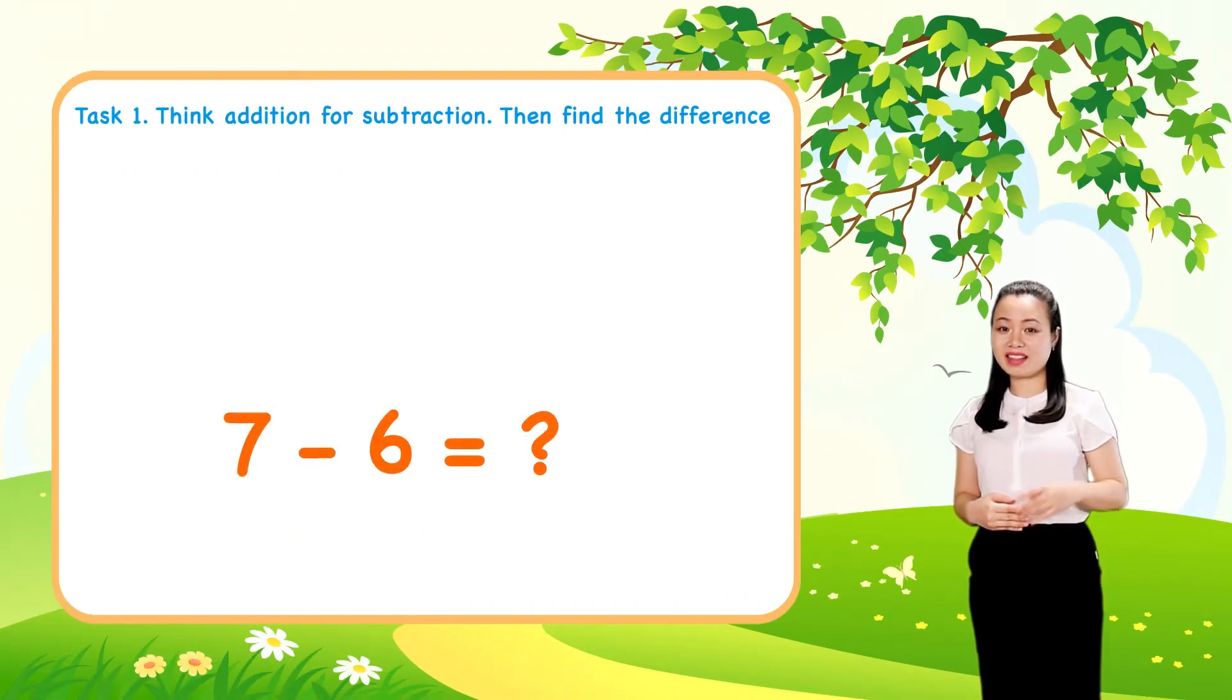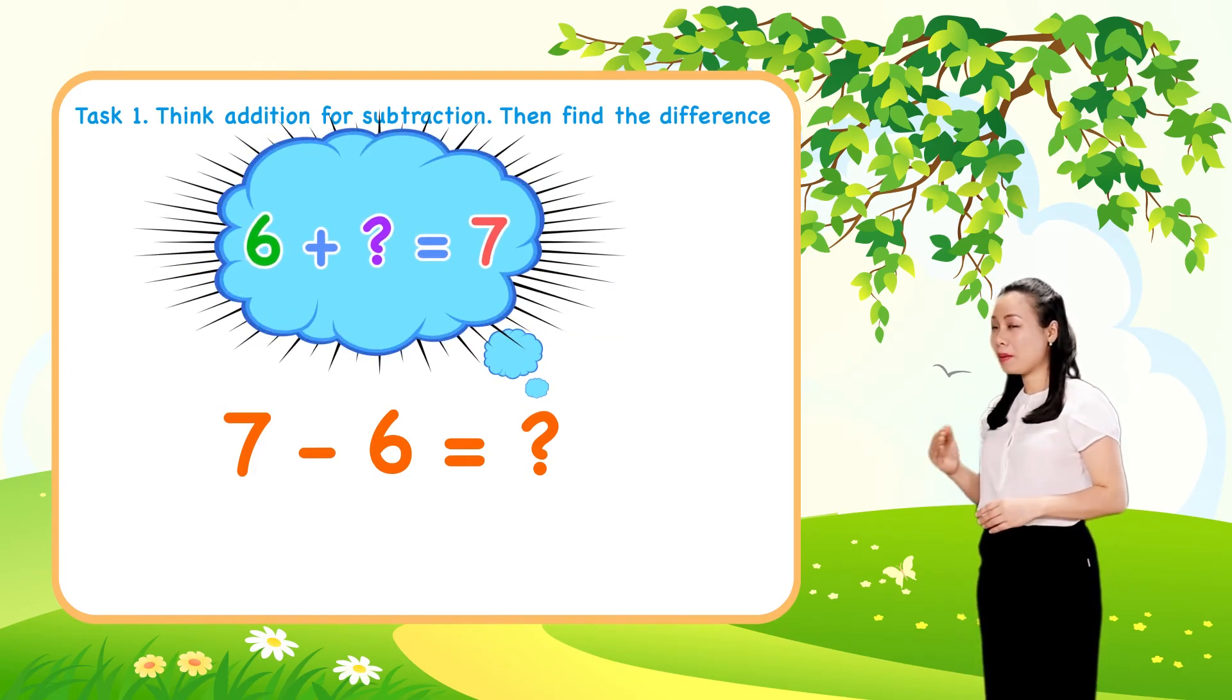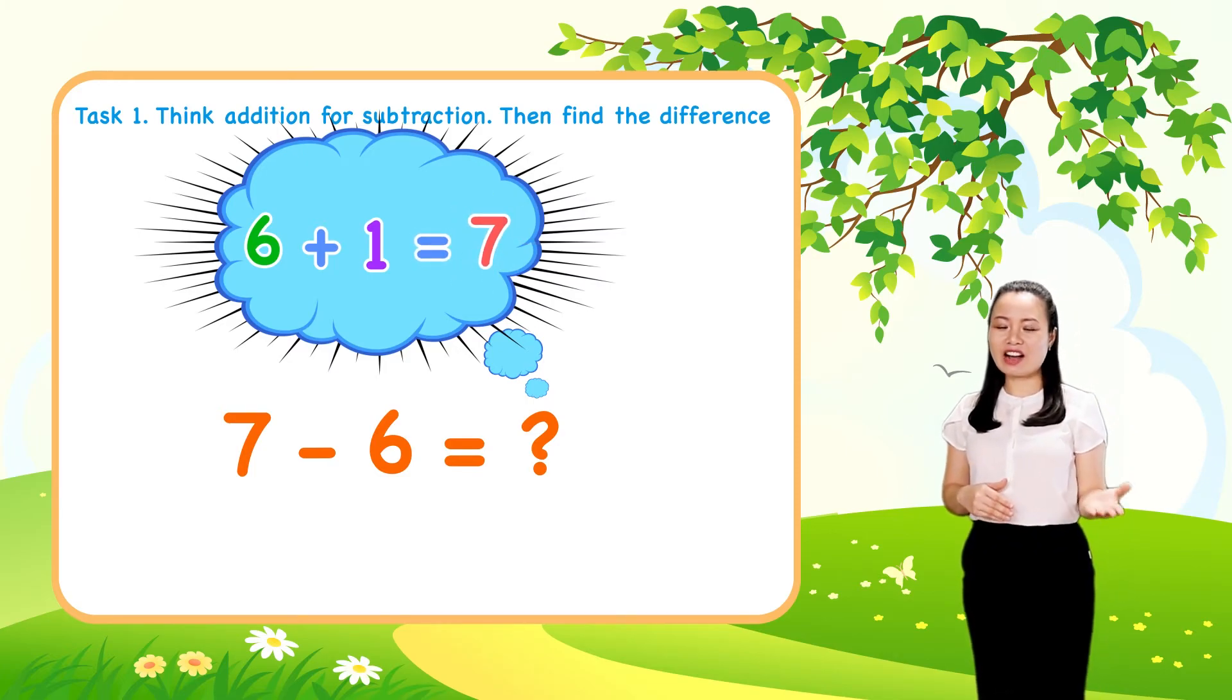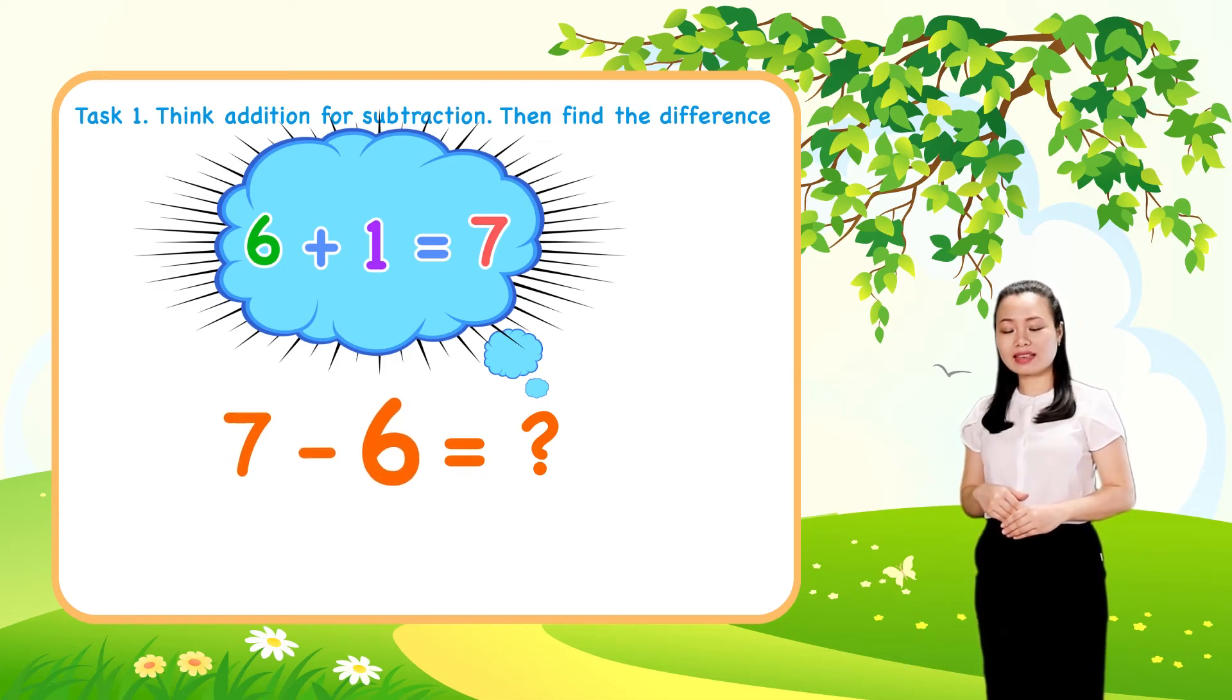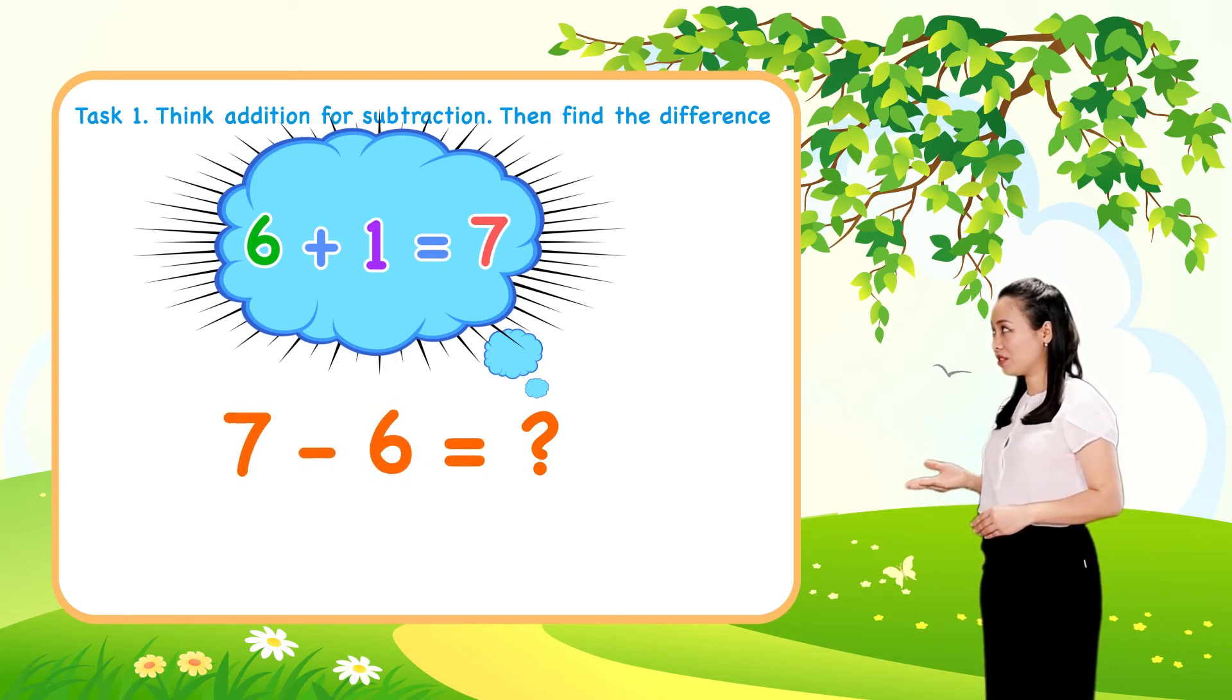Next, think 6 plus 1 equals 7. So 7 minus 6 equals 1.